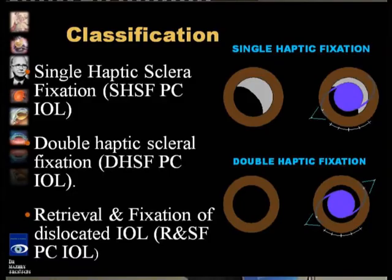If the aphakia is further complicated by a dislocated pseudophakos, nuclear fragments, or the nucleus itself is dislocated, it will of course be combined with double haptic or single haptic scleral fixation, combined with some other procedure like PPV, retrieval, and fixation of the same lens, or IOL exchange.